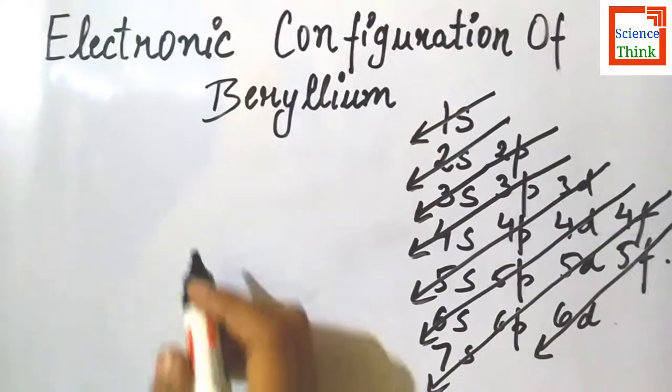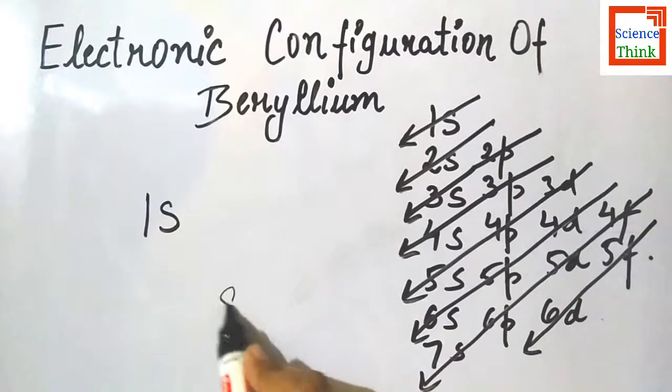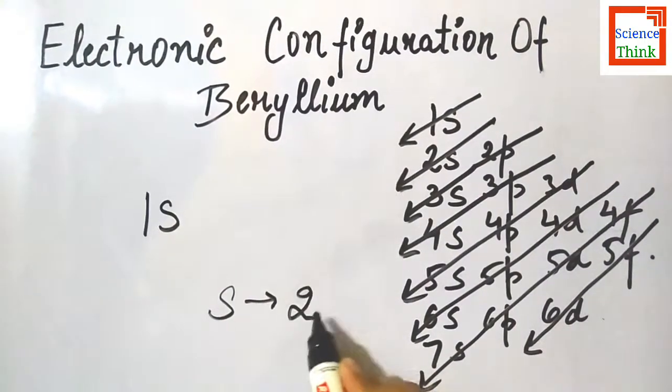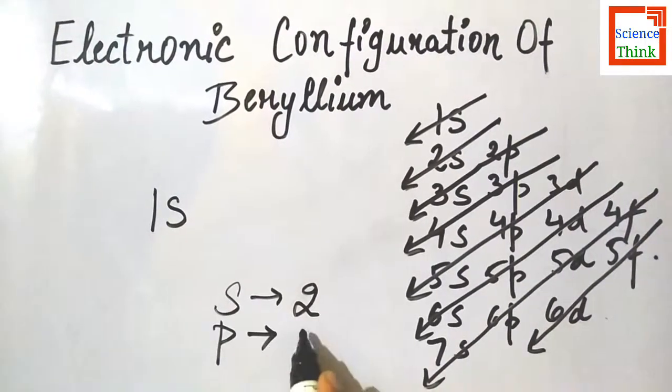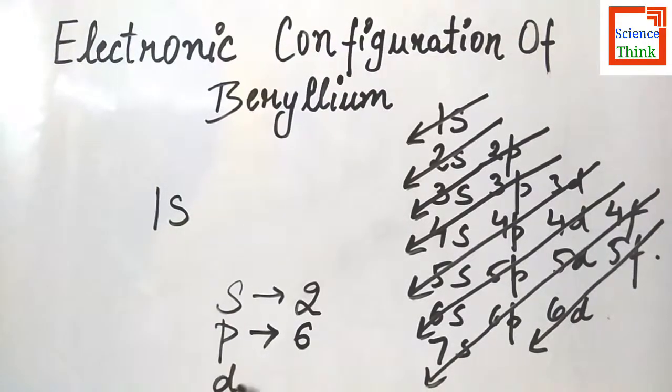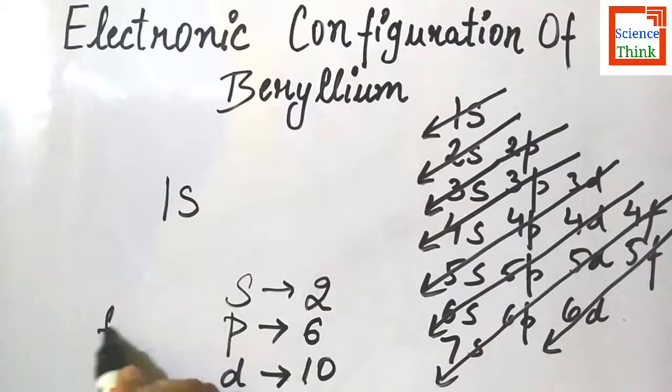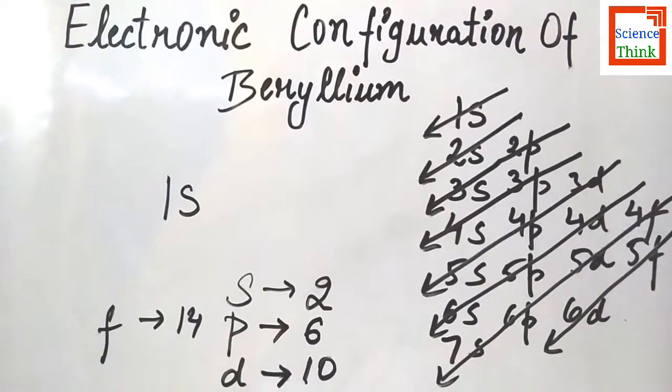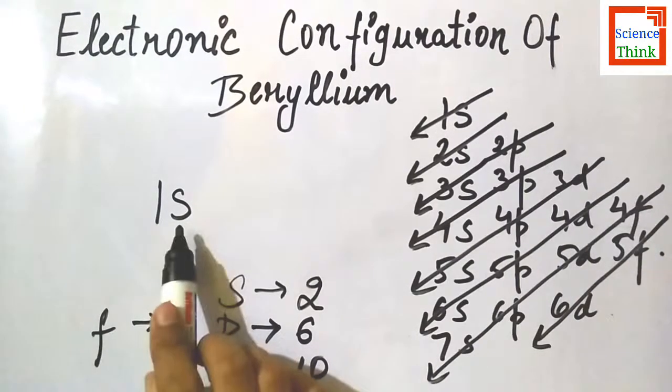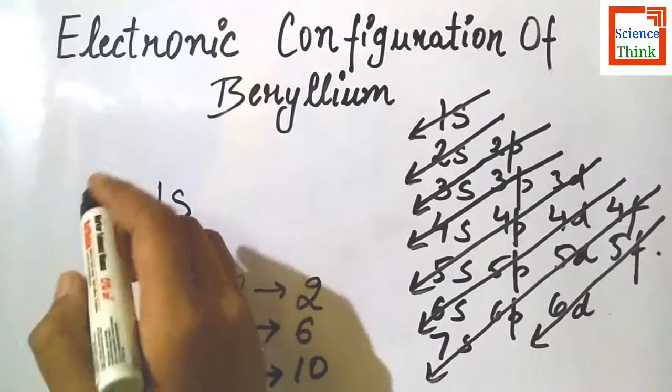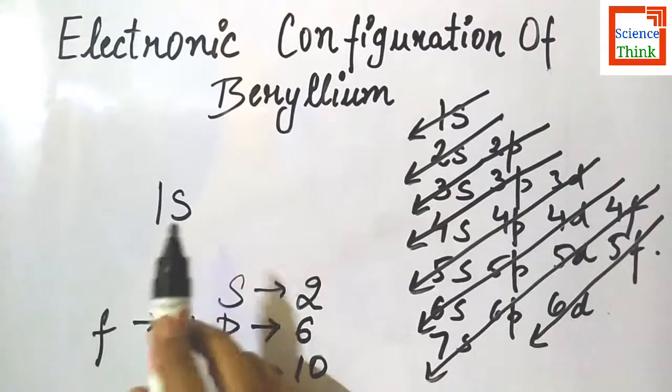From here we know firstly we will fill 1s, and we know s orbitals cannot accommodate more than 2 electrons, p orbitals can accommodate 6 electrons, d orbitals can accommodate 10 electrons, and f orbitals can accommodate 14 electrons. So now we know firstly we will fill the 1s, then 2s, and s orbital can accommodate only 2 electrons. So we will first write the total number of electrons of beryllium.